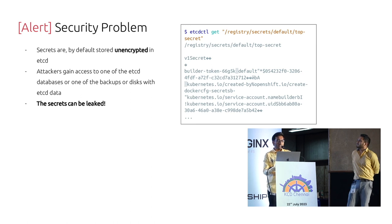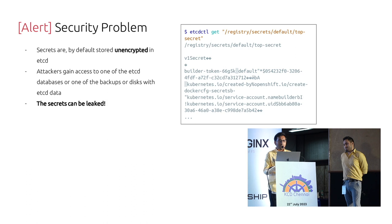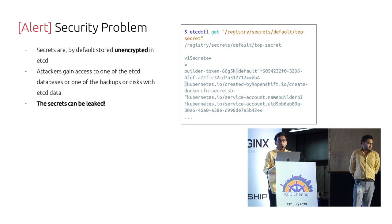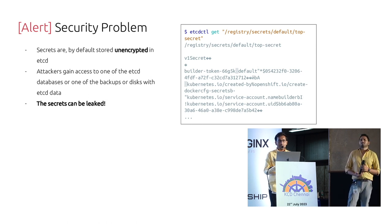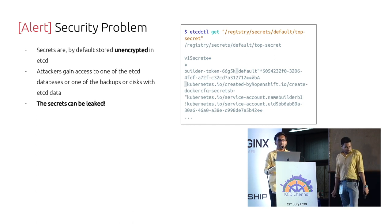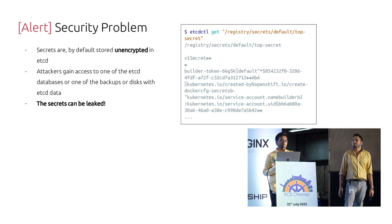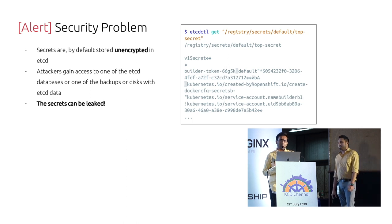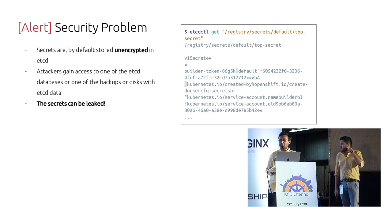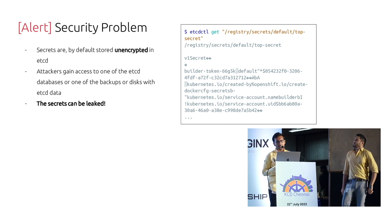If you try to visualize what is inside your etcd database using an etcdctl tool, you will find that all the secrets are stored in plain text format — they are not encrypted. That is the default implementation Kubernetes has. So if an attacker gains access to your etcd database, they can access all the sensitive data present inside it and walk away with all usernames, passwords, and anything else stored there.